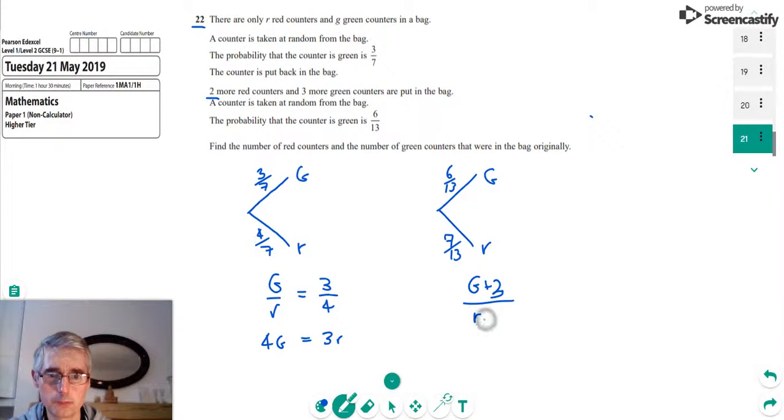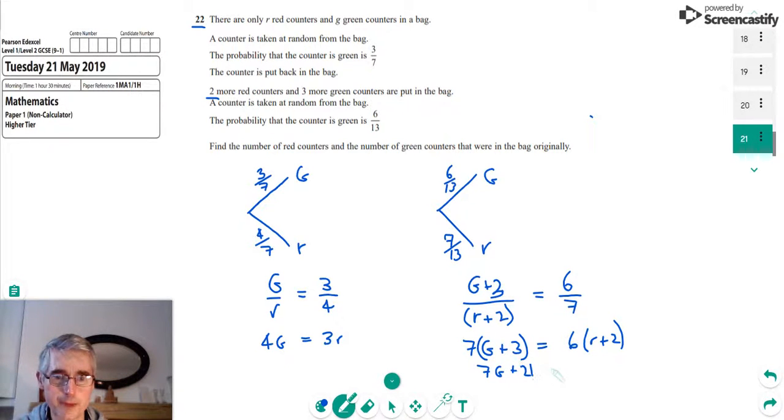And that is equal to the ratio of these two fractions, 6 over 13 and 7 over 13, so it's equal to 6 over 7. If we multiply by R plus 2 here, what we'd end up with is G plus 3 equals 6 times R plus 2. And multiplying by the 7, which comes up onto this side of the equation. If we multiply out these brackets, what we'll end up with is 7G plus 21 equals 6R plus 12.